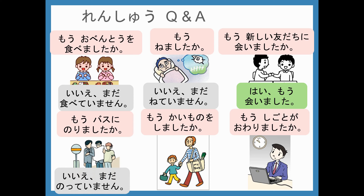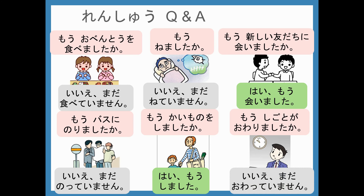They've got some shopping with them. And the last one — looks like he's still working. So, we use もう with ました to show what we have already done, or to ask about what we've already done, and まだ plus ていません to talk about what we haven't done yet. Take a look at the exercise below and practice using もう and まだ in a sentence.